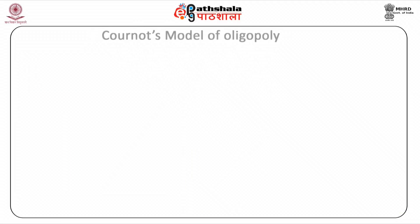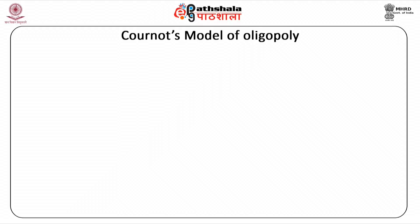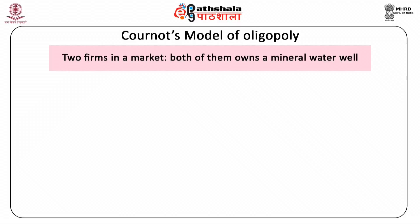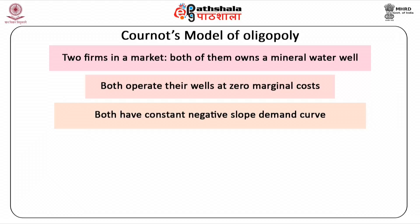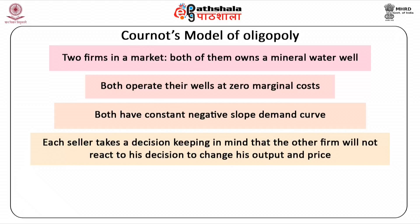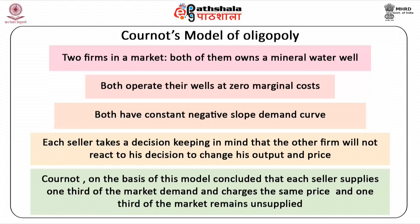Let us now understand the Cournot's model of oligopoly. Augustin Cournot was a French economist who developed the model of oligopoly based on the following assumptions: there are two firms in a market; both of them own a mineral water well; both operate their wells at zero marginal cost; both firms had constant negative slope demand curve; and each seller takes a decision keeping in mind that the other firm will not react to his decision to change his output and price. Cournot concluded that each seller supplies one-third of the market demand and charges the same price, and one-third of the market remains unsupplied.